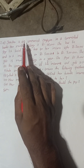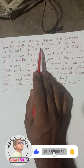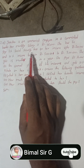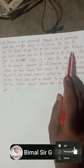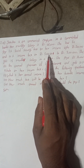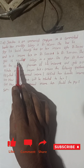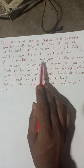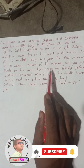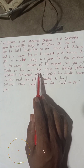Jenisha is an unmarried employee in a commercial bank. Her monthly salary is Rs. 45,000. She has to pay 1% social security tax on her income up to Rs. 5 lakh and 10% income tax on Rs. 5 lakh 1 to Rs. 7 lakh. She gets 15 months salary in a year. She pays Rs. 30,000 as the annual premium of life insurance and gets 10% rebate on her income tax.